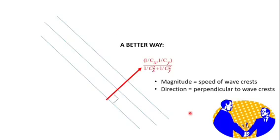There is actually a better alternative. You can form a vector from the reciprocals, 1 over cx and 1 over cy, and then divide by the sum of the squares, 1 over cx squared plus 1 over cy squared. The result is a vector, a real vector, whose magnitude is the speed of the wave crests and whose direction is the direction that the waves are moving in. Best of all, it doesn't matter who measures it or how they do it. If they place their instruments differently, their measurements will yield different numbers, but we can easily correct for that. And when we do, we'll find that the results are consistent.